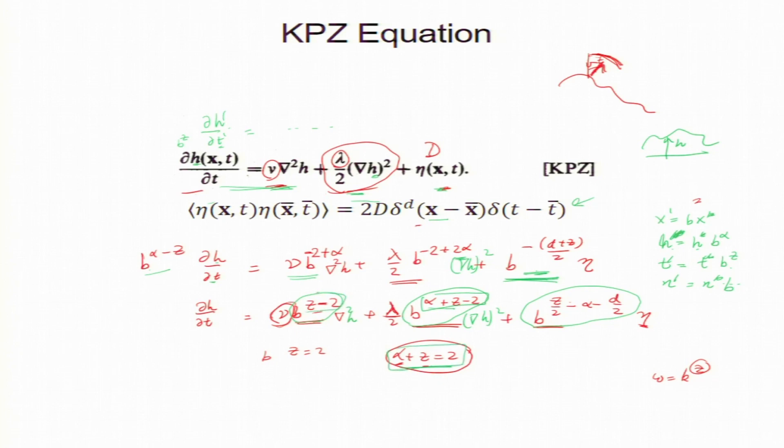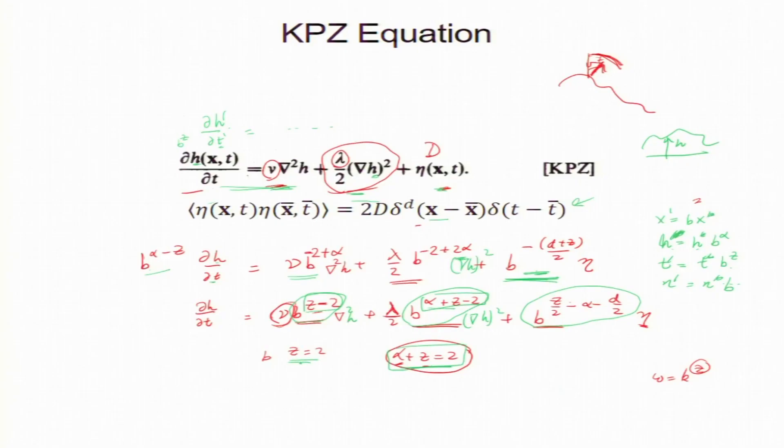Now, what does this give you? b to the power z minus 2 is 0. Sorry, b to the power z minus 2 is 1. So, z minus 2 is 0. So, that should give you z equal to 2. That means alpha equal to 0.